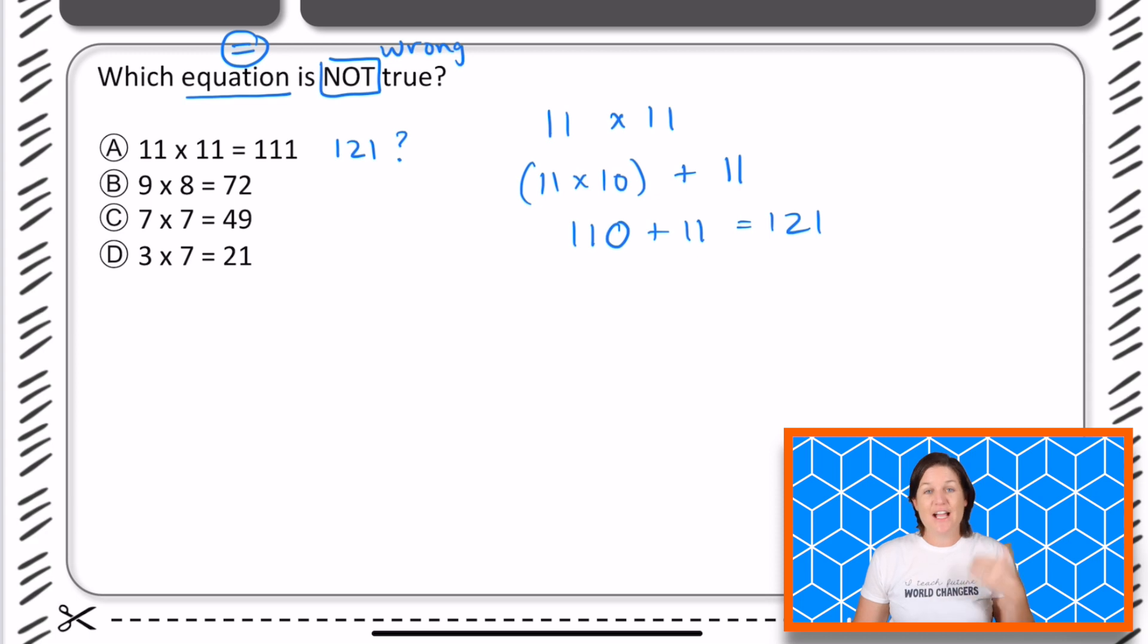All right, now for nine times eight. Nine times eight. Is that 72? It is. So this one is true. We're looking for the answer that is not true. So we can eliminate this one.